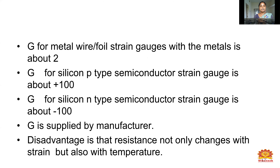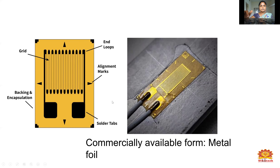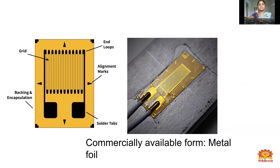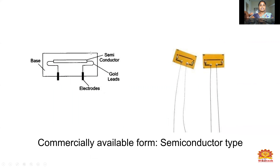A disadvantage of the strain gauge is that resistance not only changes with strain but also with temperature. The diagram of a strain gauge shows: backing and encapsulation, the grid, the end loop alignment mask, and solder tabs — this is the commercially available form of a metal foil strain gauge. For the semiconductor type strain gauge, the components are: gold lead electrodes, and the base metal.